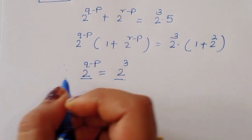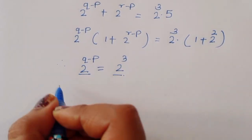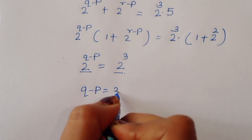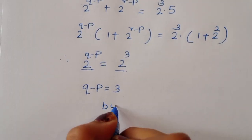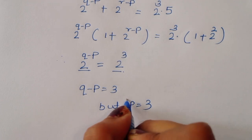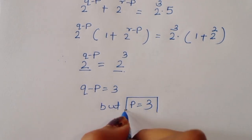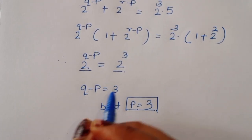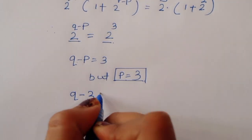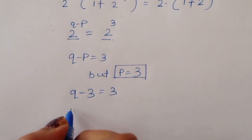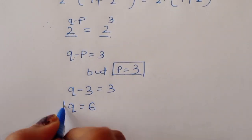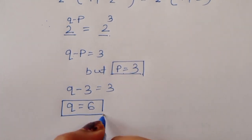Since the bases are the same, Q minus P equals 3. But P equals 3, so substituting: Q minus 3 equals 3, therefore Q is equal to 6.